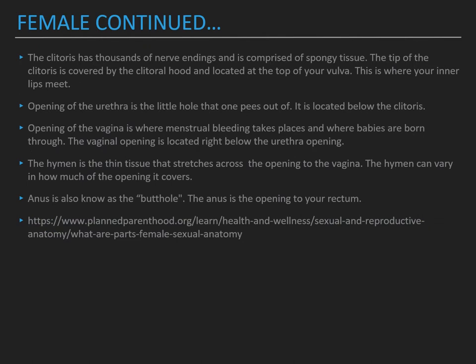The clitoris has thousands of nerve endings and is comprised of spongy tissue. The tip of the clitoris is covered by the clitoral hood, located at the top of your vulva where the inner lips meet. The urethral opening is the small hole one urinates through, located between the clitoris and the vaginal opening. The vaginal opening is where menstrual bleeding takes place and where babies are born, located right below the urethral opening. The hymen is thin tissue that stretches across the opening to the vagina and can vary in how much of the opening it covers. The anus, also known as the butthole, is the opening to your rectum. This all came from Planned Parenthood.